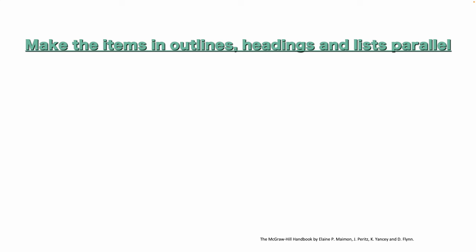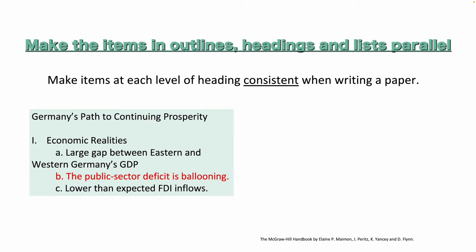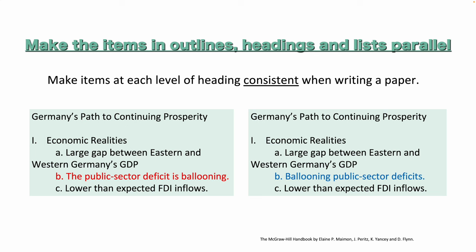Make the items in outlines, headings, and lists parallel. Make items at each level of heading consistent when writing a paper. For example, we have Germany's path to continuing prosperity. Number one, economic realities: A — large gap between Eastern and Western Germany's GDP; B — the public sector deficit is ballooning; and C — lower than expected FDI inflows. Well, B is faulty, so let's revise it and make it into a phrase, not a sentence: ballooning public sector deficits. Do you see the difference? I hope so.